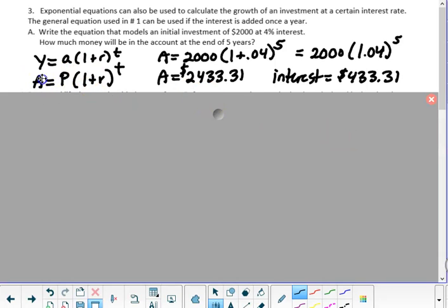Now, I'm going to just change a couple of the variables. Typically, we use P for principal, the starting amount, and then A represents the amount after t years.